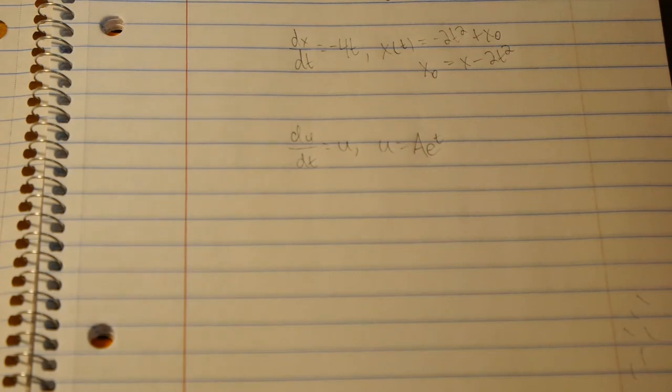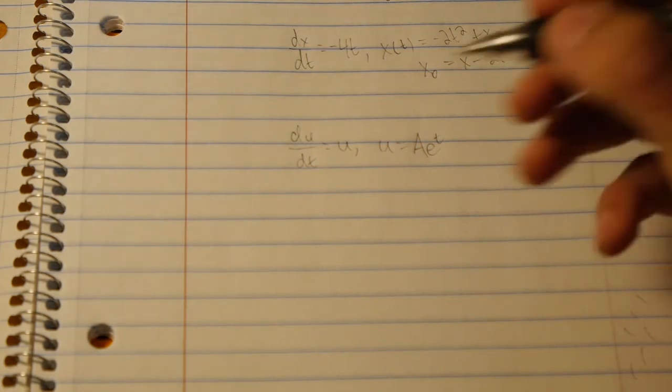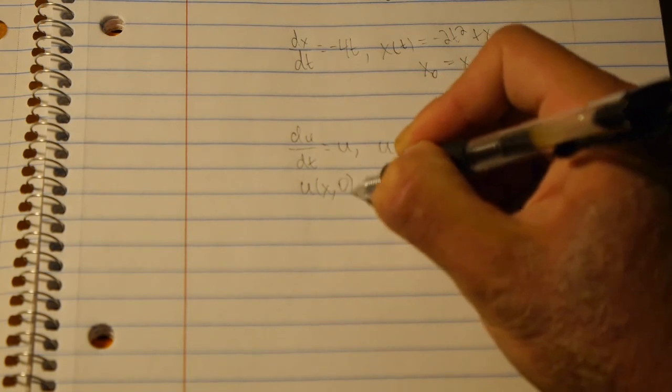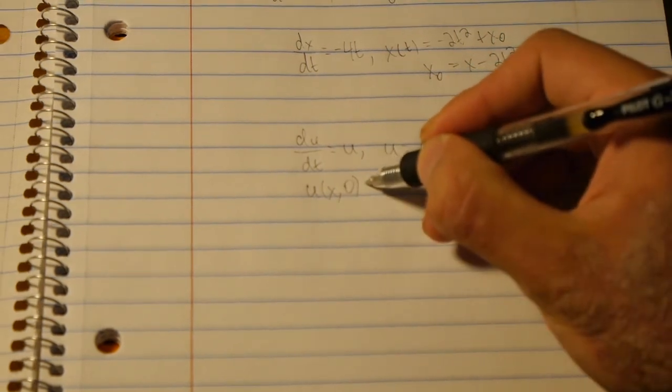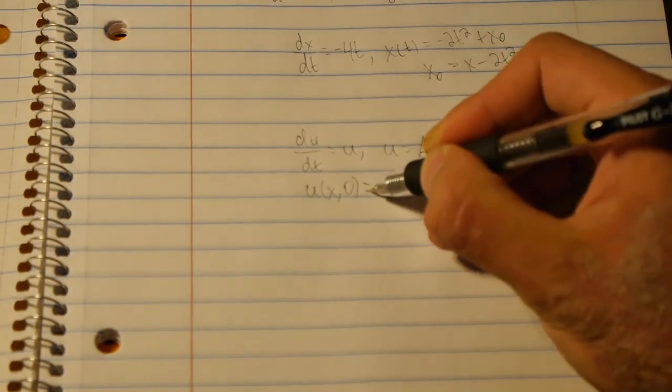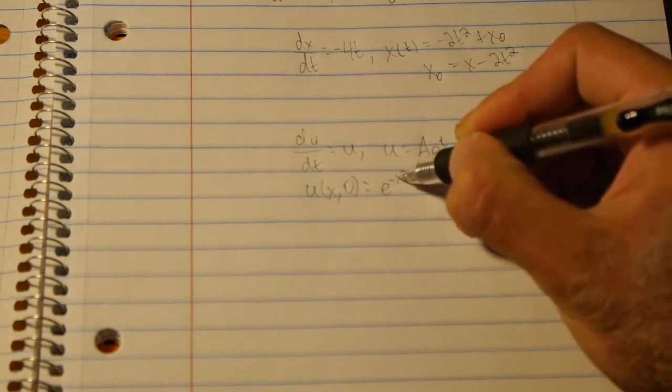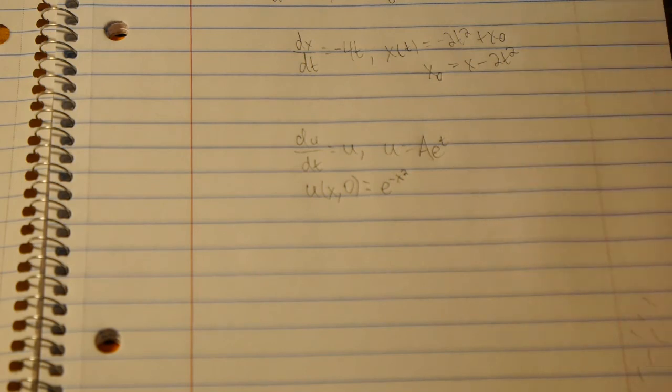So now what we can do is plug in our initial condition. So we have u(x,0) and we know it's equal to e to the negative x squared. So what we're going to do here is we found x naught earlier and x naught will be what we use for when t is set to 0.